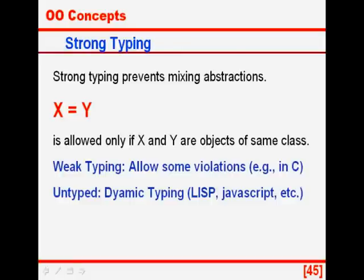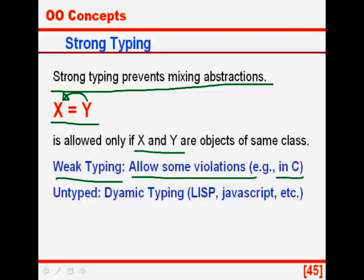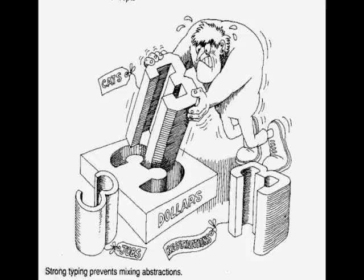Another very important feature of object oriented programming is strong typing. Strong typing prevents mixing of abstractions — this is the definition given by Grady Booch. What does that mean? The statement y is assigned to x will be allowed in the language if and only if x and y are objects of the same class; otherwise they are not allowed. Weak typing allows some violations as in C, where we can assign a float to an int and vice versa. The other extreme is an untyped or dynamically typed language — for example Lisp, JavaScript — where variables have no type and can take on any value. In simple words, object oriented programming avoids putting a square peg into a round hole or a round peg into a square hole. This is strong typing.